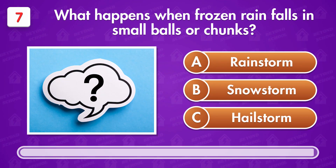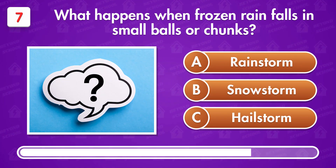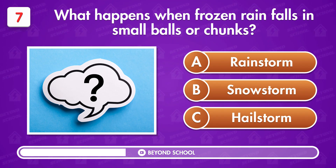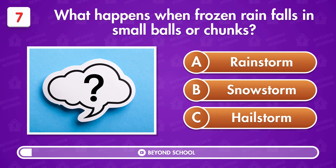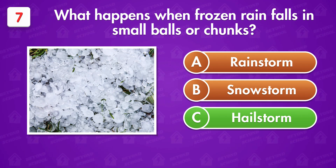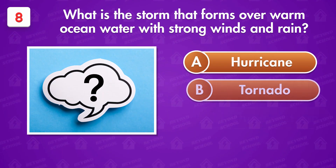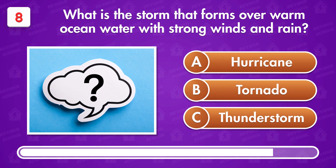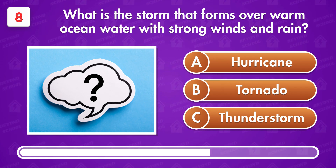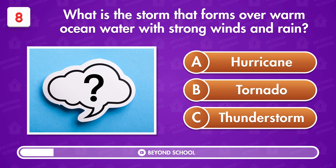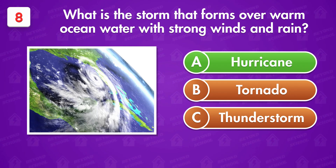What happens when frozen rain falls in small balls or chunks? What is the storm that forms over warm ocean water with strong winds and rain? Hurricane.